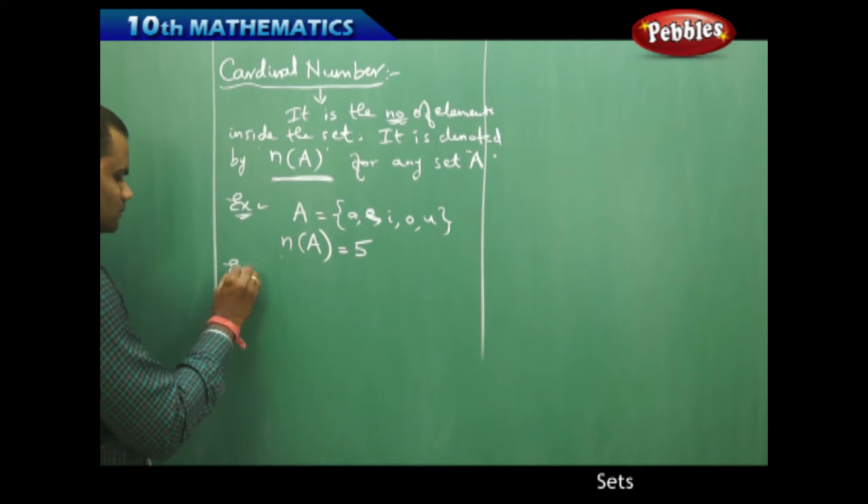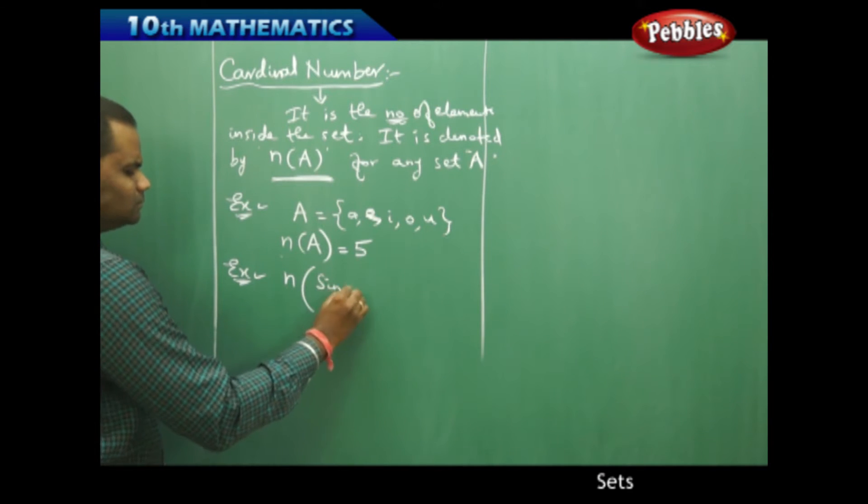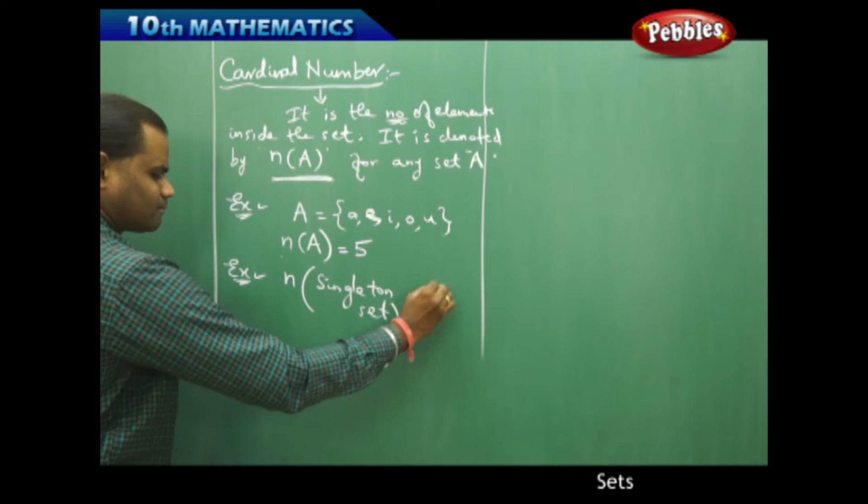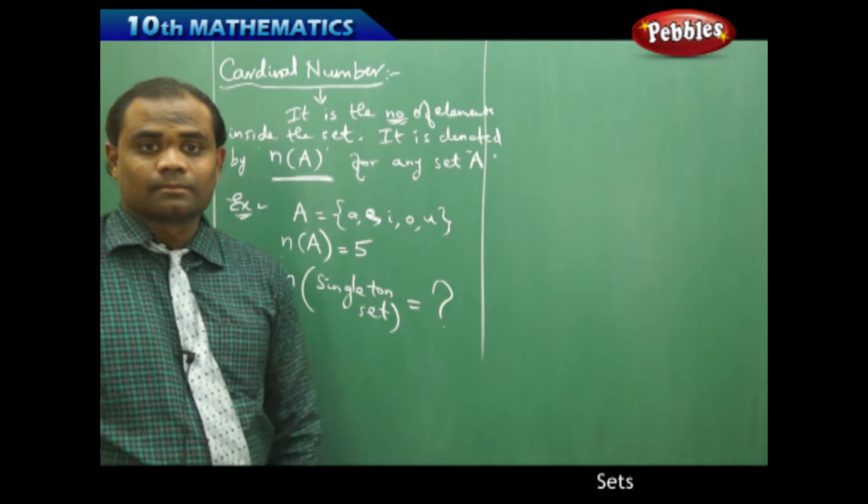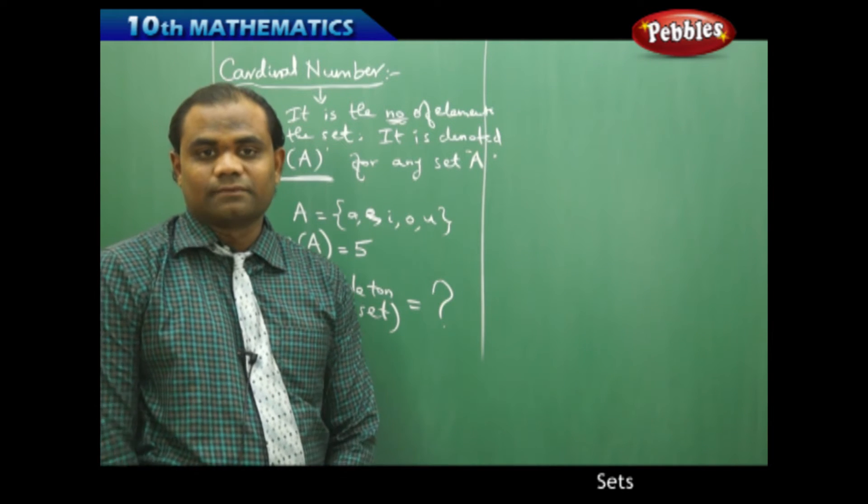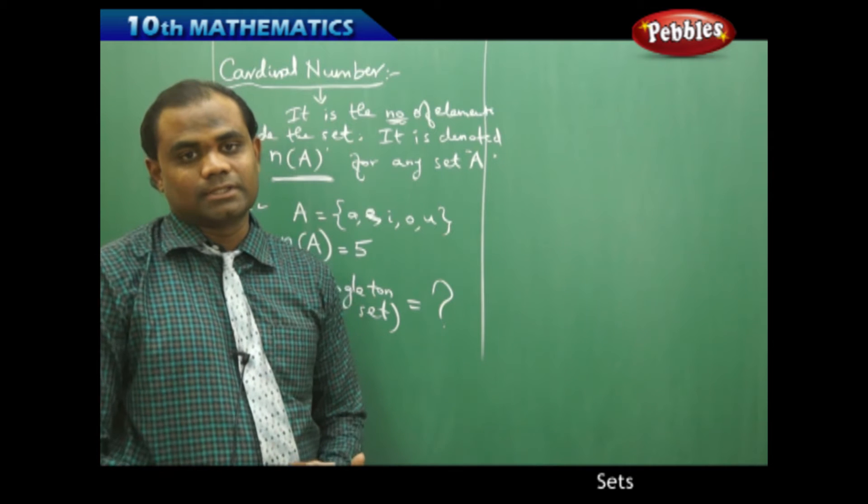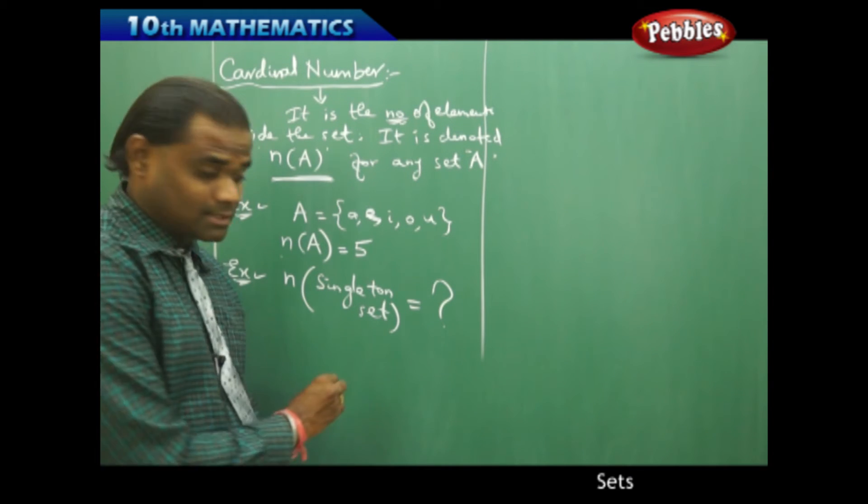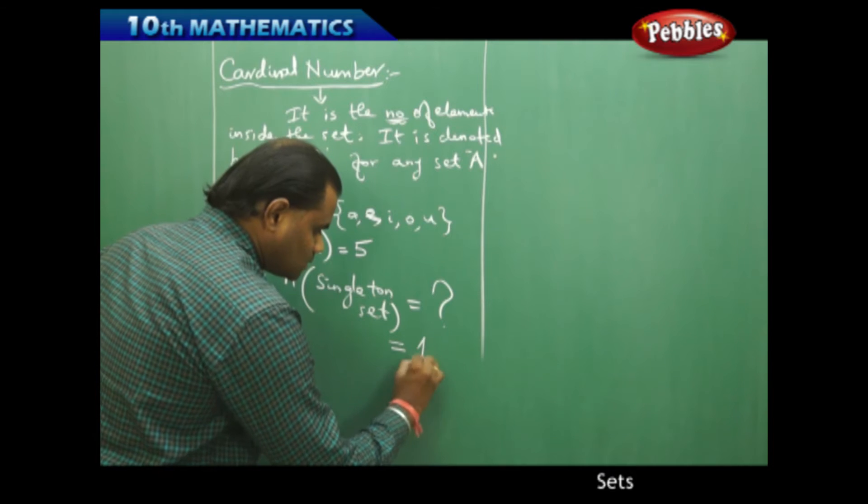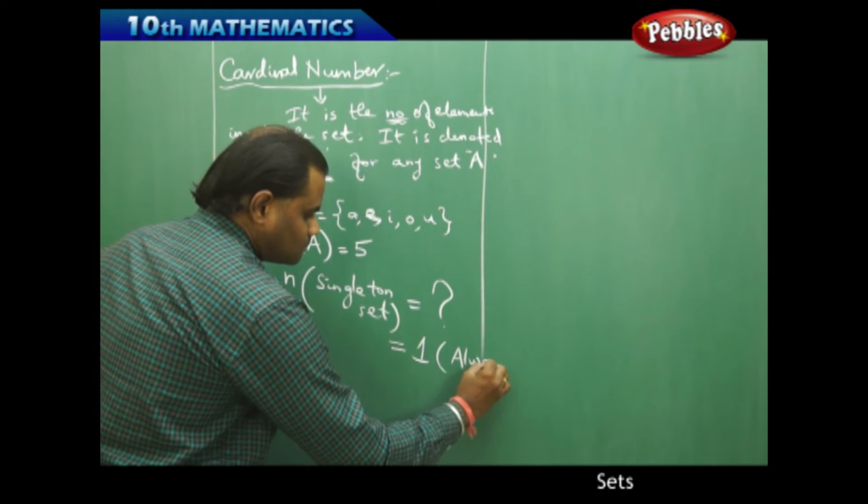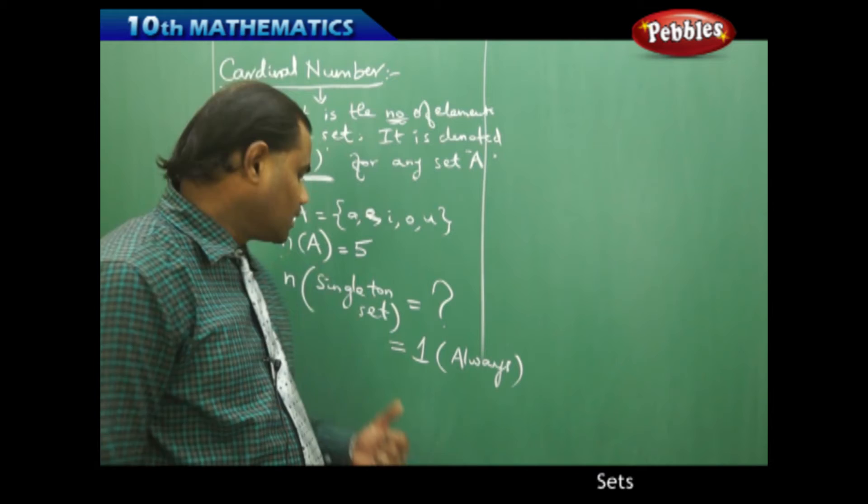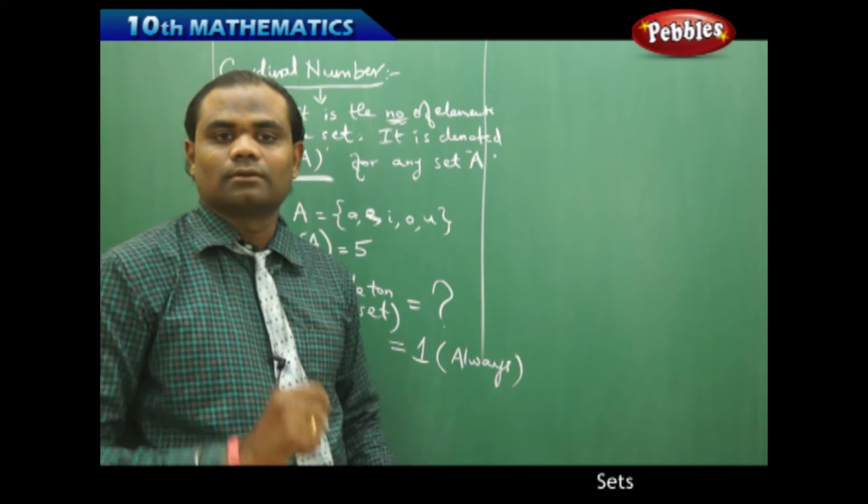Similarly, the singleton set is a set which has only one single element inside. Therefore, the cardinal number of a singleton set is always 1. This is always true for any singleton set.